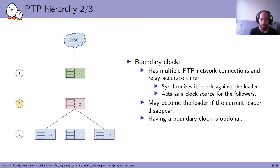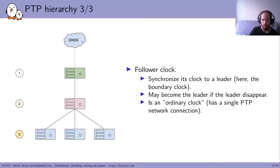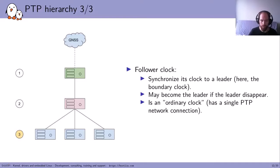If the leader disappears, the boundary clock may become the next leader. Finally, follower clocks are all the elements in the PTP network that want to be synchronized against the leader. They are also ordinary clocks, and may be synchronized against the boundary clock or directly against the leader depending on the network architecture. If the leader disappears, followers may also become the new leader.